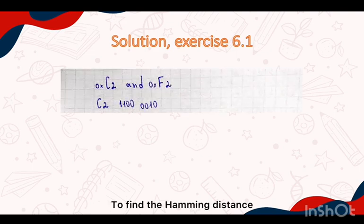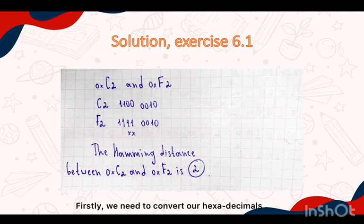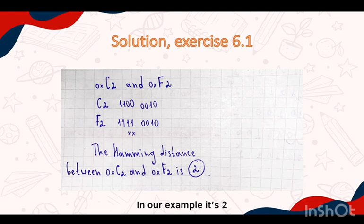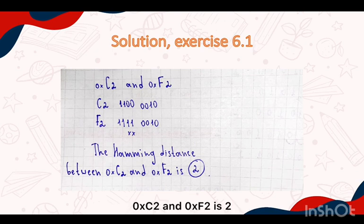To find the Hamming distance, firstly we need to convert our hexadecimals to binary numbers and compute how many bits are different. In our example it is 2, so the Hamming distance of c2 and f2 is 2.